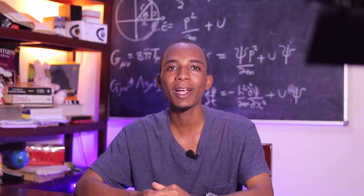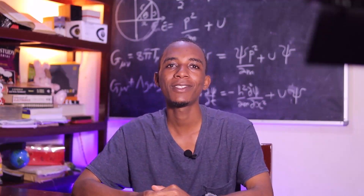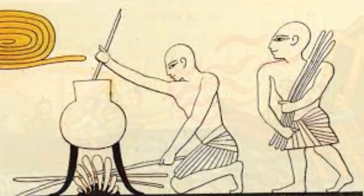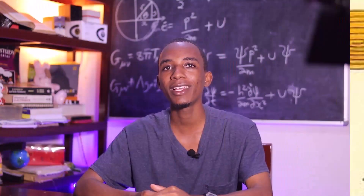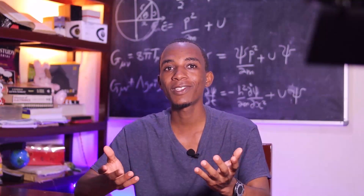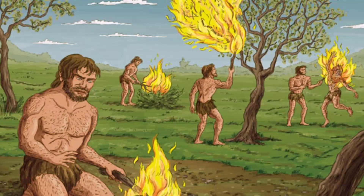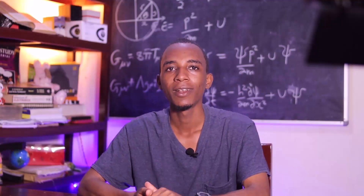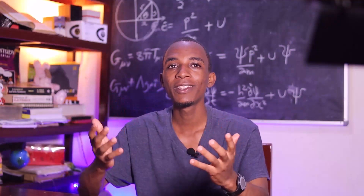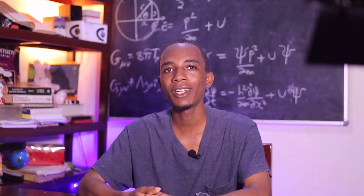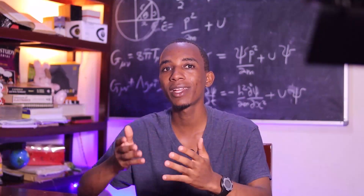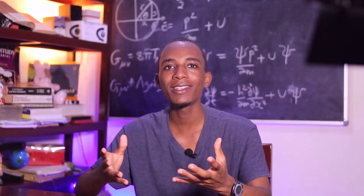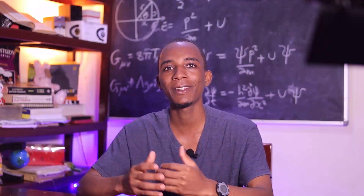The quest to understand heat dates back many centuries ago. The ancient Greeks and Egyptians considered heat to be an element called fire. In fact, this is no surprise because fire is one of the earliest and most important inventions of mankind. They considered it to be one of the four fundamental elements of the earth, the other three being earth, air, and water. This was their cosmological and philosophical framework — their understanding of the universe at that time.